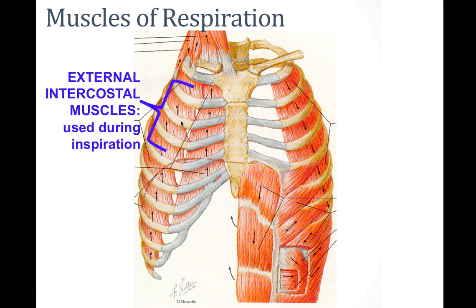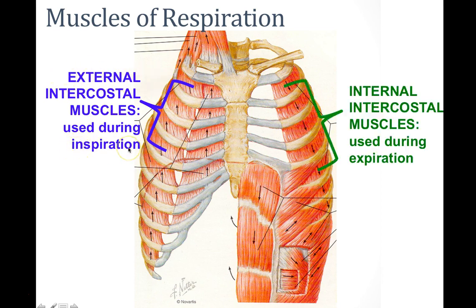Now let's discuss the muscles of respiration. The intercostal muscles are found between the ribs. External intercostal muscles are in the lateral aspect of the rib cage with fibers running inferomedially; these are used during inspiration. Counterintuitively, external causes inspiration. Internal intercostal muscles are used during expiration; their fibers run more vertically or in the opposite direction to the external intercostals, and they are better represented in the medial portion of the rib cage.